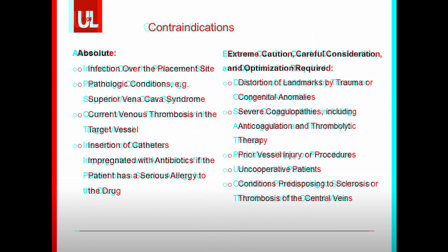As with any procedure, there are certain patient conditions that would make placing a central line contraindicated. Absolute contraindications include infection over the placement site, pathologic conditions such as superior vena cava syndrome, current venous thrombosis in the target vessel, and insertion of catheters impregnated with antibiotics that the patient has a serious drug allergy to. Relative contraindications requiring extreme caution and careful risk-benefit consideration include distortion of landmarks by trauma or congenital abnormalities, severe coagulopathies including anticoagulation and/or thrombolytic therapy, prior vessel injury or procedures to the target vessel, uncooperative patients, and conditions predisposing to venous sclerosis or thrombosis.